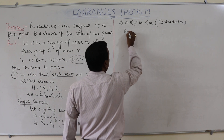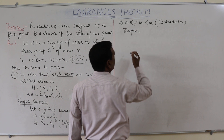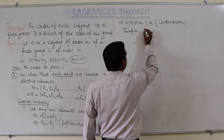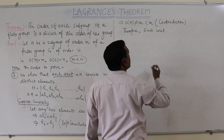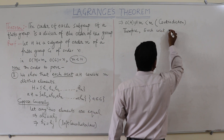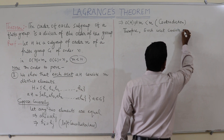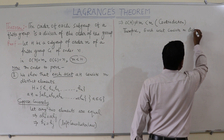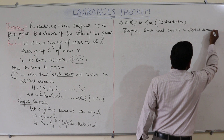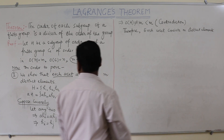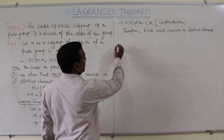Therefore, we can say each coset consists of M distinct elements. This completes part one. Now, part two.